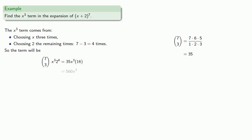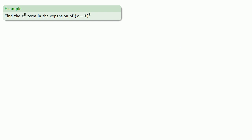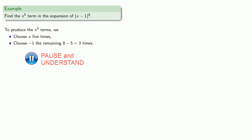Let's find the x⁵ term in the expansion of (x - 1)⁸. If we want to produce the x⁵ term, we have to choose x five times and choose (-1) the remaining 8 - 5 = 3 times. So our term will be (8 choose 5) × x⁵ × (-1)³. And we can compute that to get 56x⁵ × (-1) = -56x⁵.